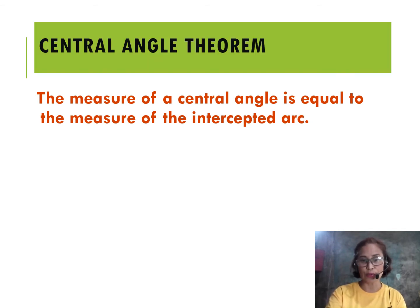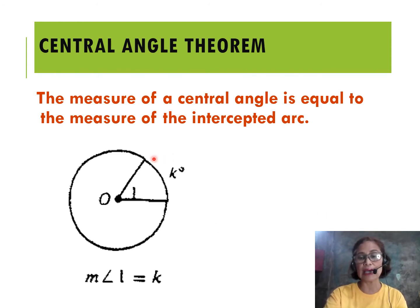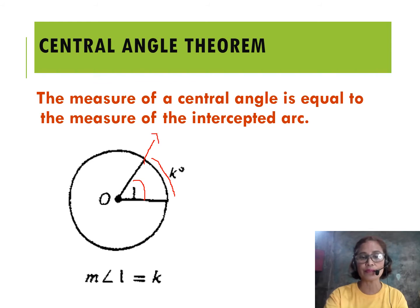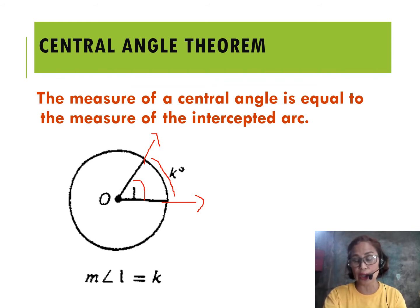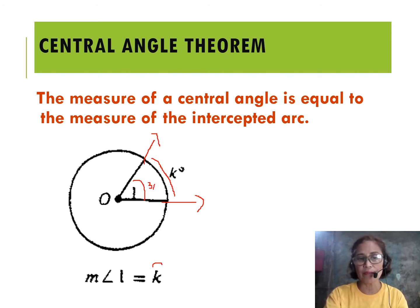Moving on, there is a theorem related to the central angle called the central angle theorem. The measure of the central angle is equal to the measure of the intercepted arc. In this illustration, we have arc K degrees, which is the intercepted arc of angle 1. If angle 1 is extended, it intersects the circumference of the circle, taking arc K. So the measure of angle 1 equals arc K. For example, if angle 1 is 30 degrees, therefore arc K, the intercepted arc, is also 30 degrees.